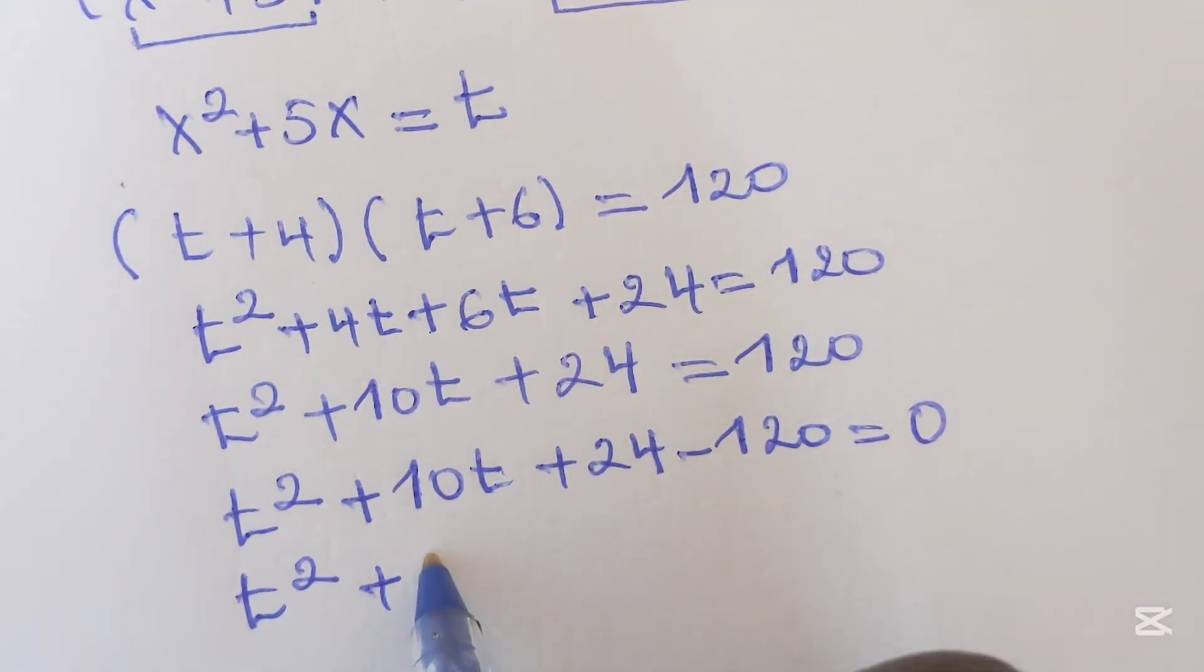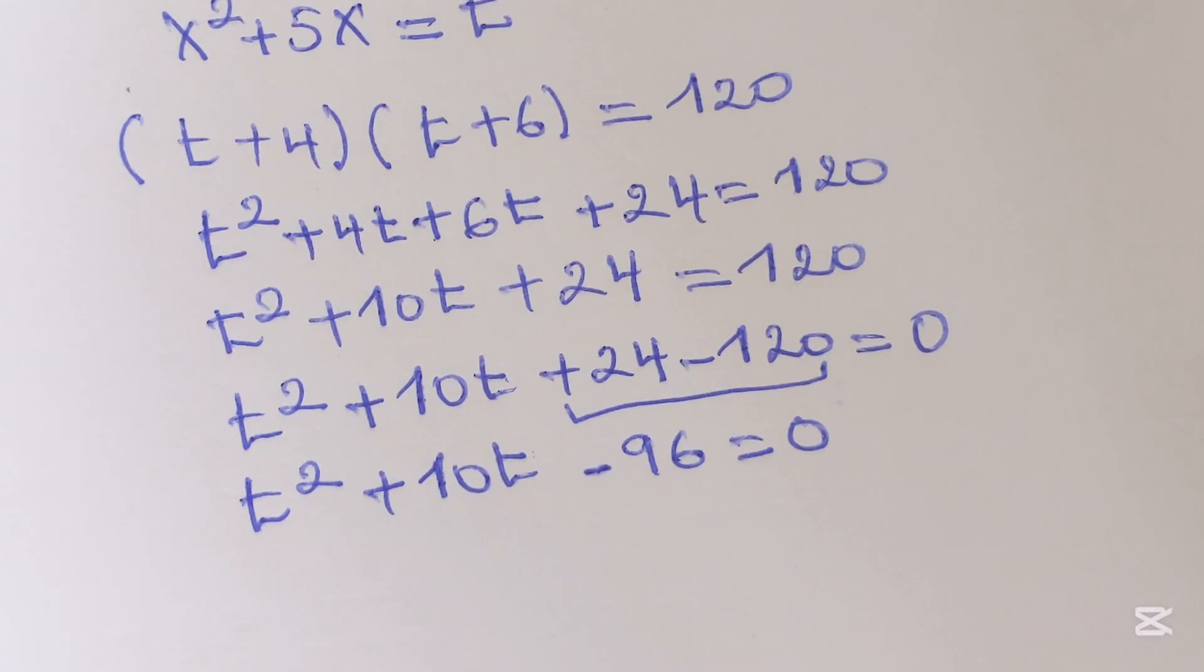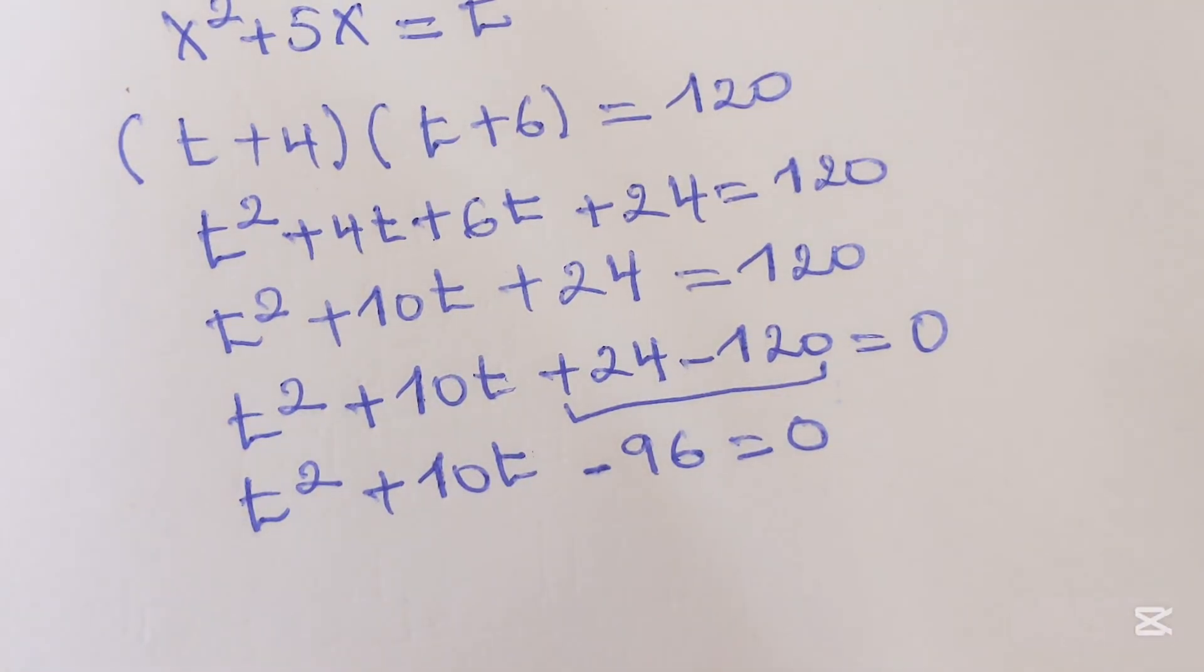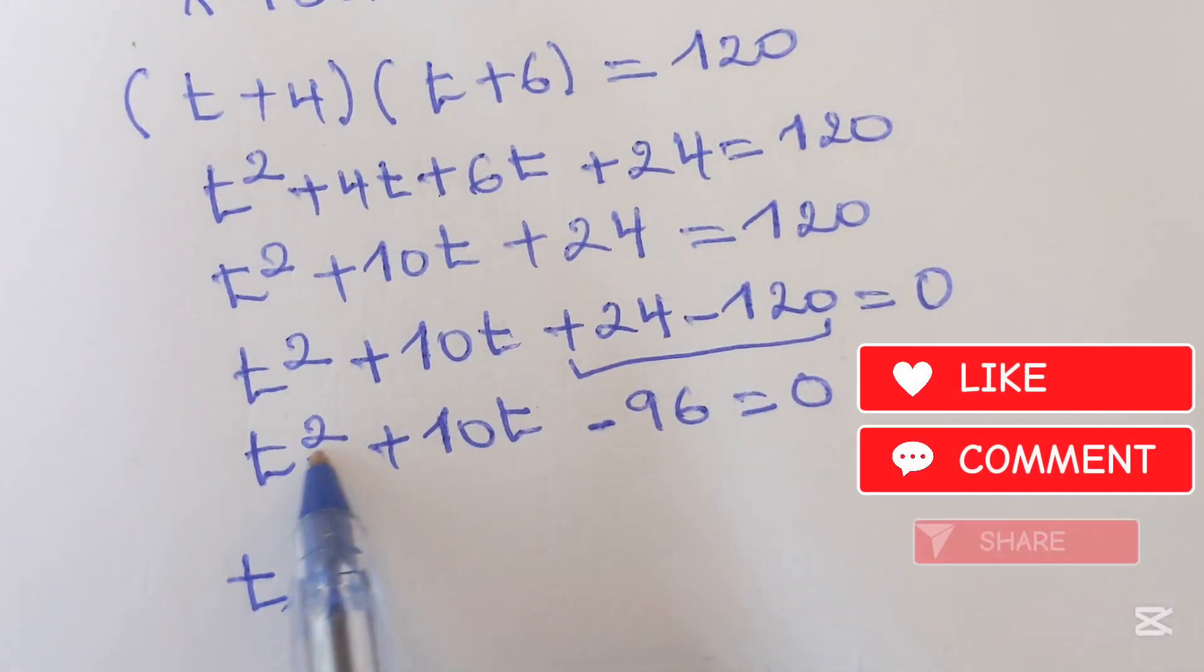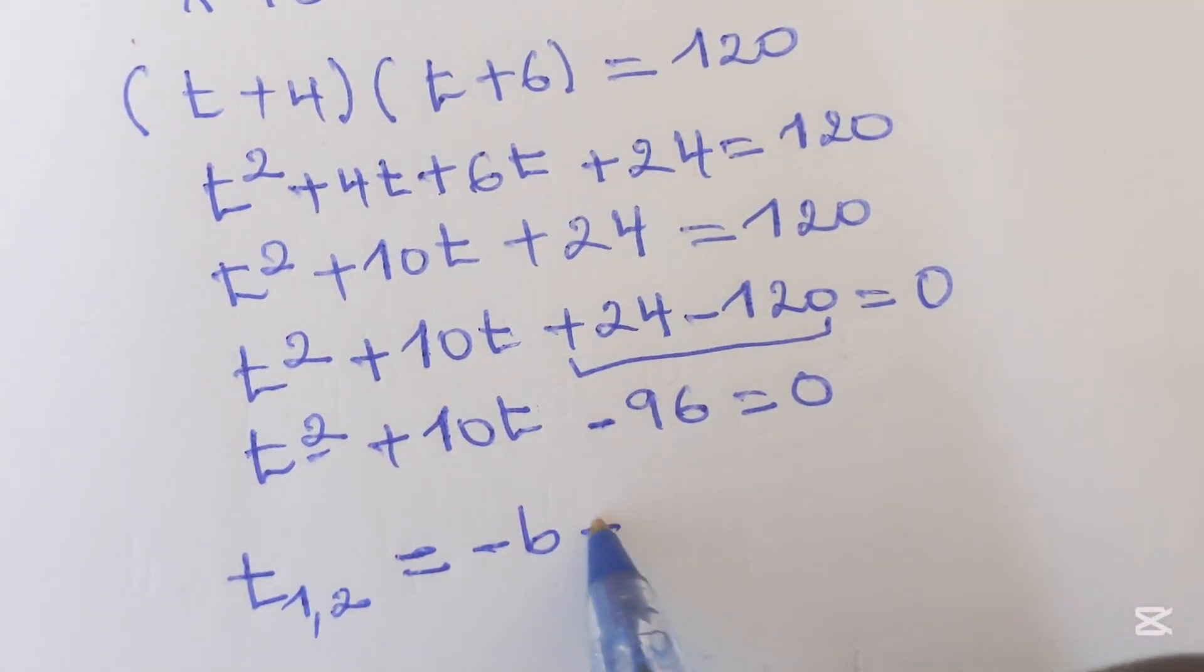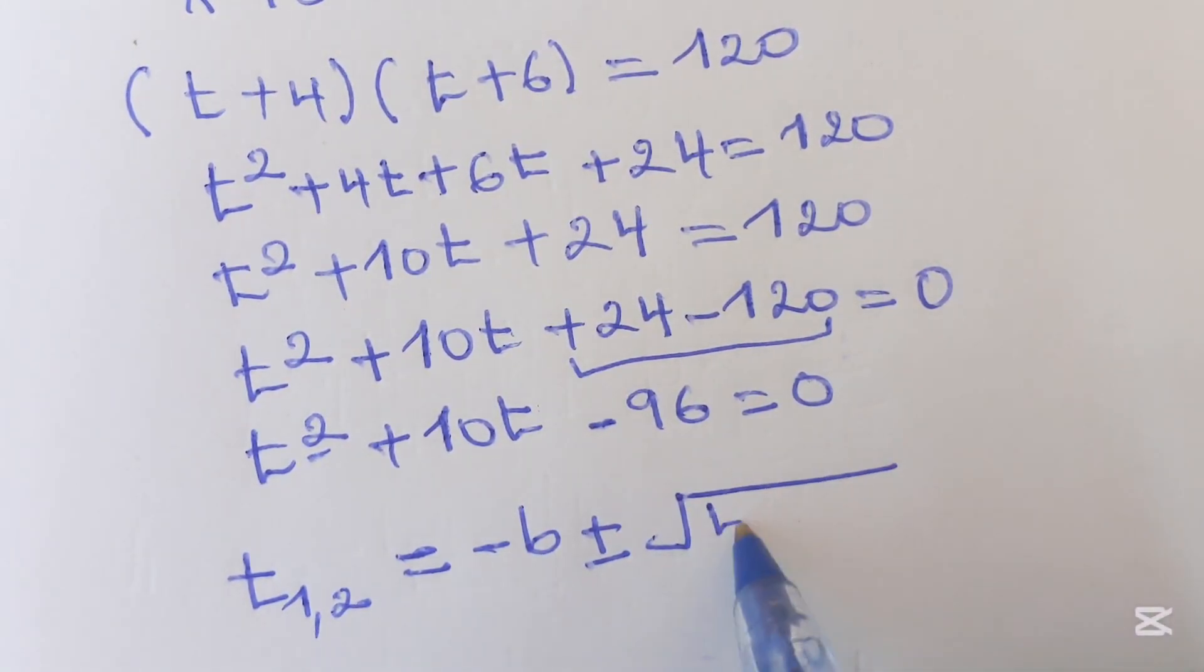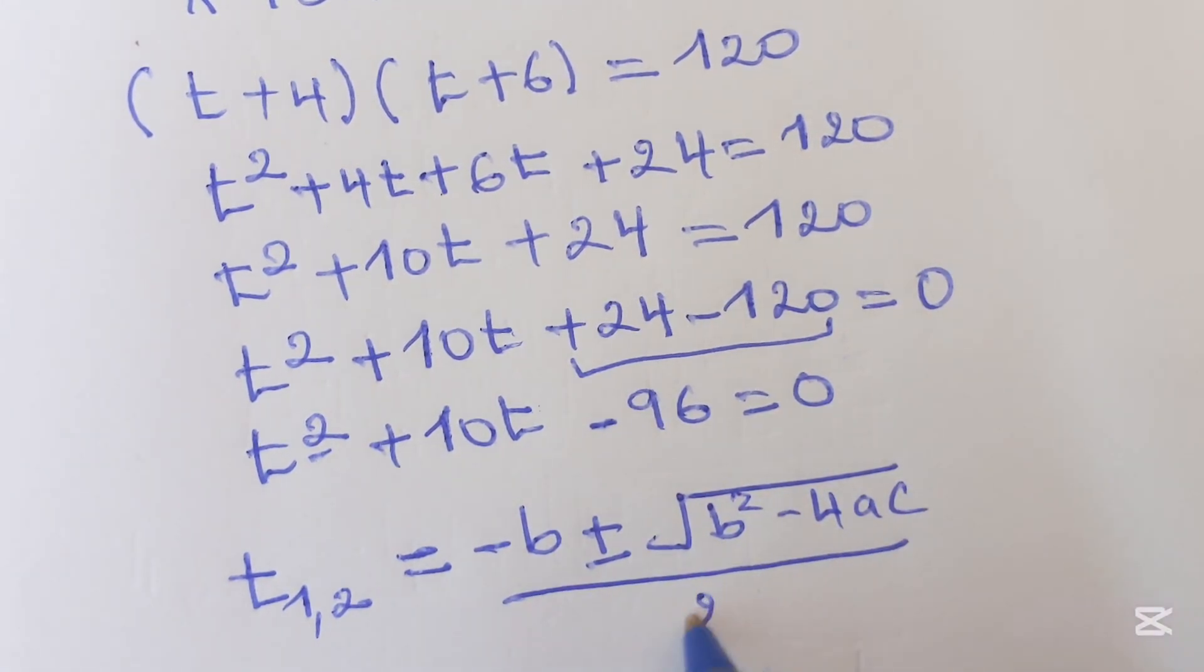t squared plus 10t, here we get negative 96 equals 0. Of course, this one is quadratic equation. You can simply deal with finding a t. To mean it is t1 and t2 because the values of t is equal to negative b plus or minus square root of b squared minus 4ac over 2a.